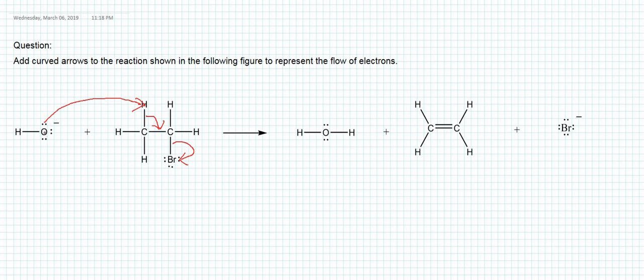So with the first arrow we show a new bond between oxygen and hydrogen; the second arrow shows the C–H bond breaking with electrons moving to form the C=C double bond; and the third arrow shows the C–Br bond breaking with the curved arrow going to bromine. With three arrows we can show the complete reaction mechanism. Thank you so much for watching.